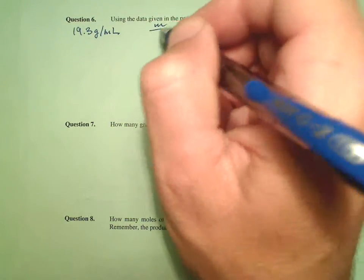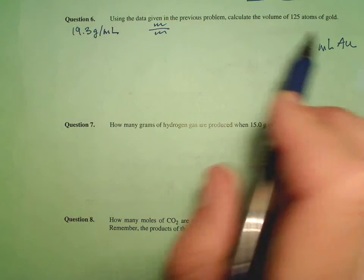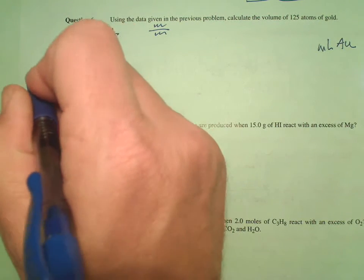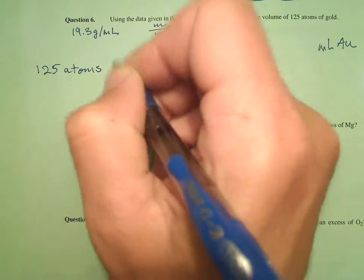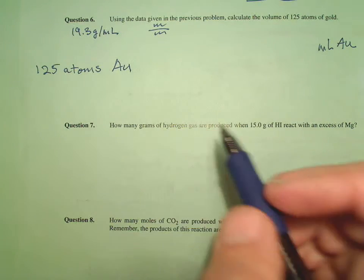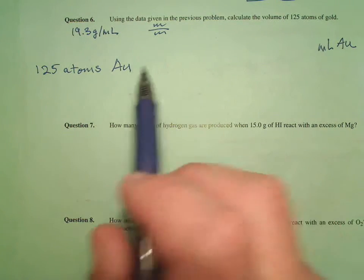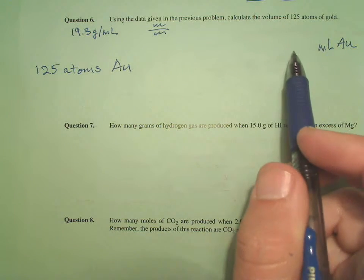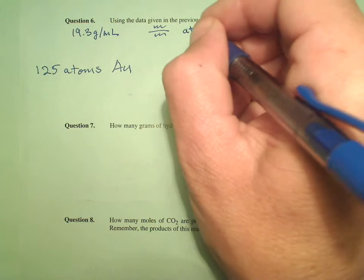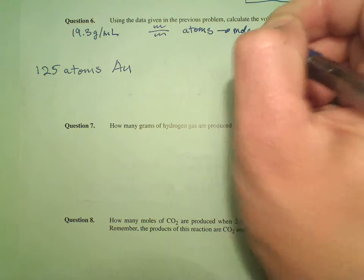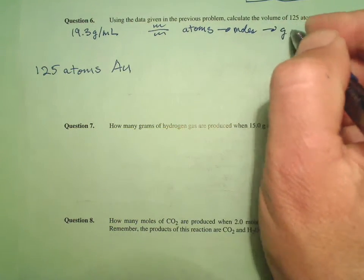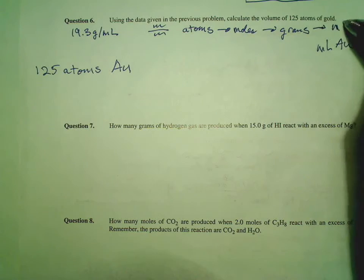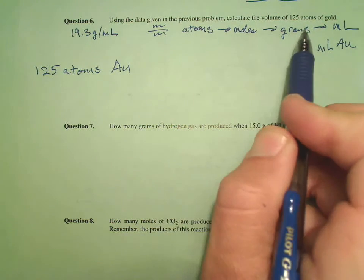If our units are something per something in the answer, we'd want to start with something per something — but they're not, so we're not going to start with our density. We're going to start with 125 atoms of gold. The plan is: how do we get from atoms to milliliters? Anytime we have particles, we have to get into moles first. So we go from atoms into moles, then moles into grams, then use our density to get into milliliters.